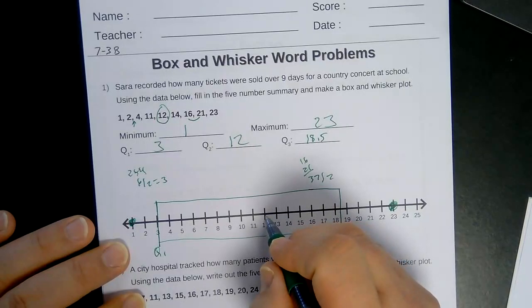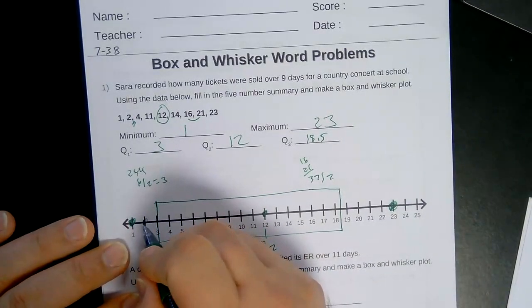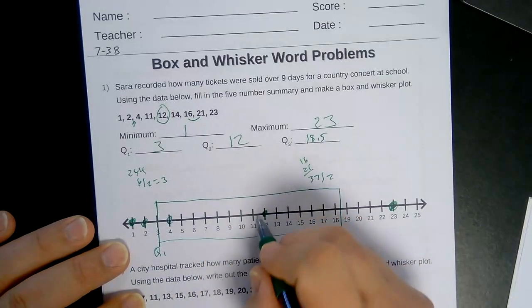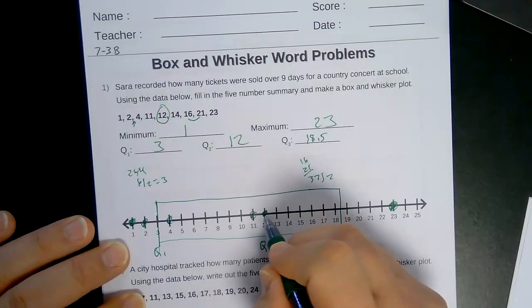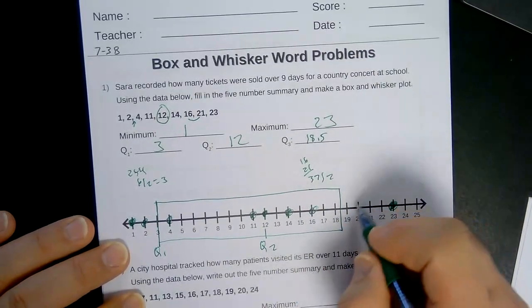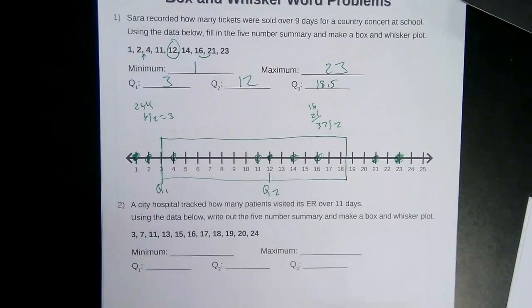Quartile 2 is at 12 and 12 is actual one of my data points. So I can actually put that on right there and then go through and put the rest of the numbers on. So there's 2, 4, 11 right here, 12 is there, 14, 16 is a data point, 21 is a data point, and 23. Okay, so we're all done.